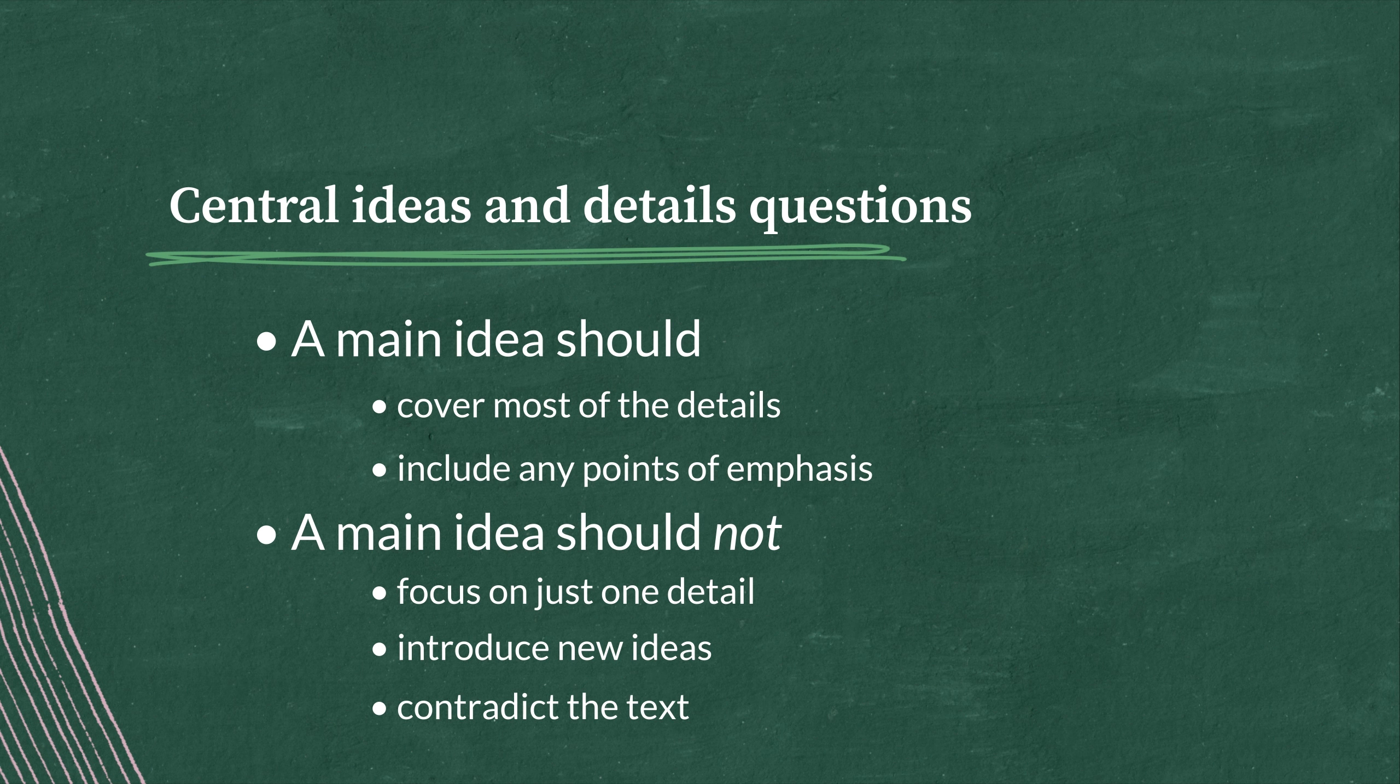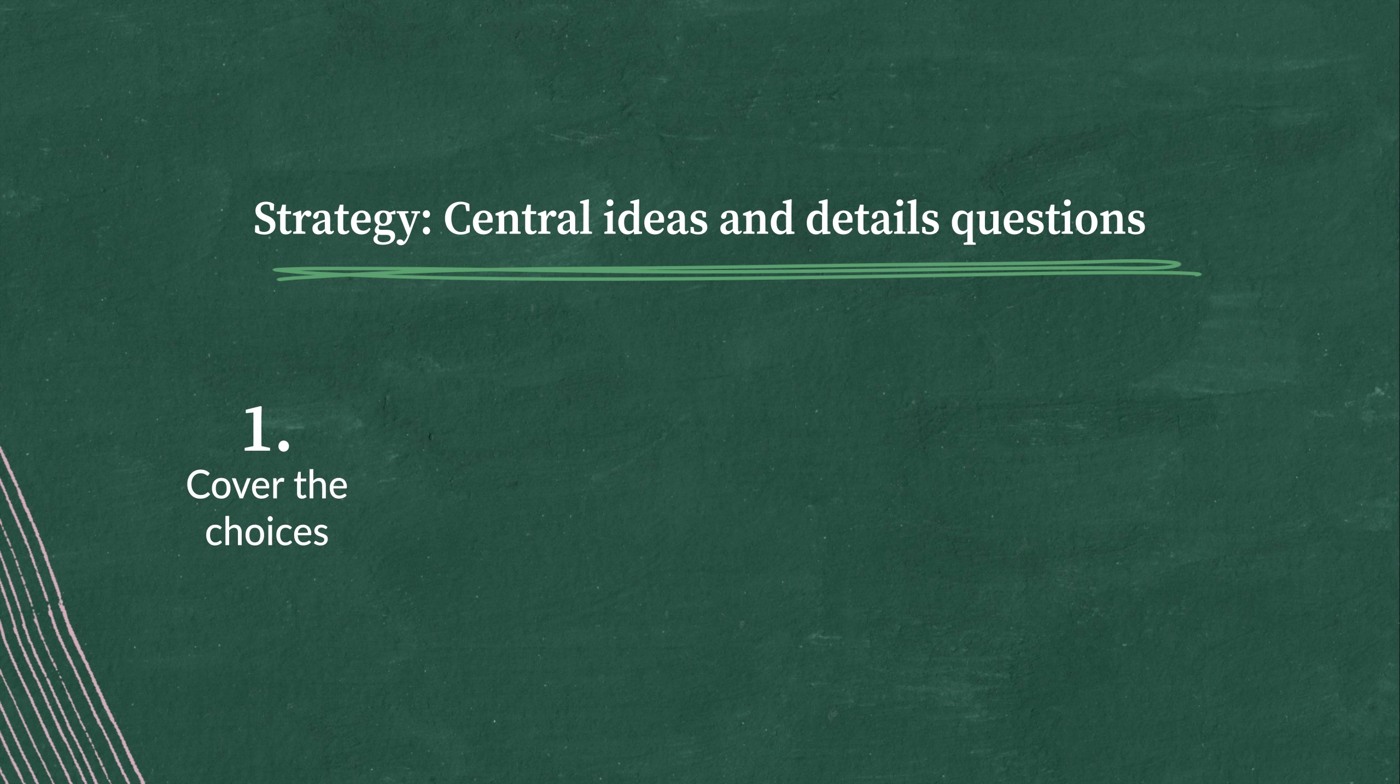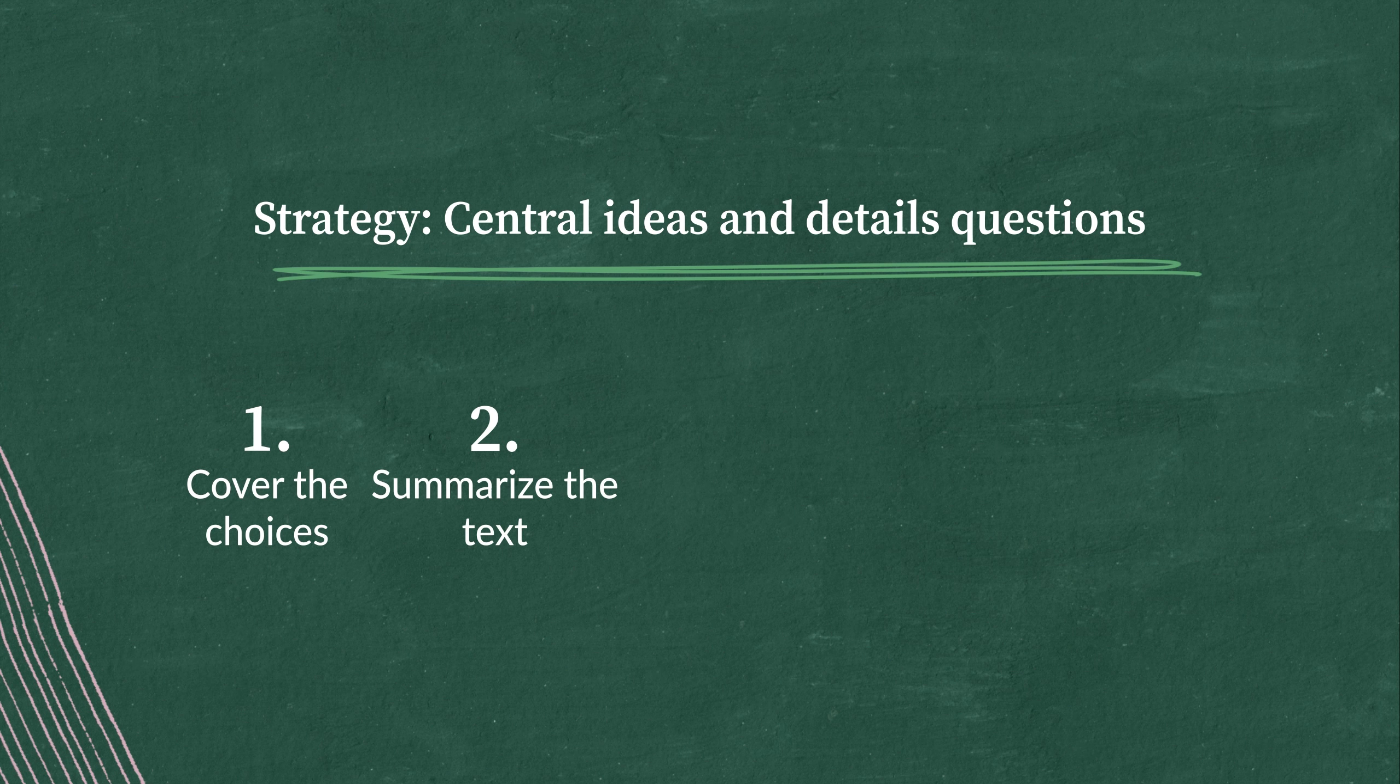So, now that we know what a main idea does, how do we go about looking for it? Well, first we suggest that you cover the choices. We don't want them to distract us from making an accurate prediction. Then we'll summarize the text in our own words. On main idea questions, this summary will function as our prediction for what the main idea is, because these passages are pretty short.